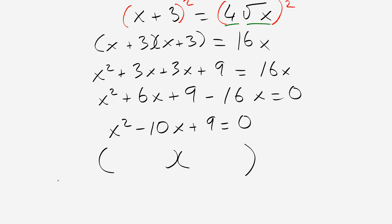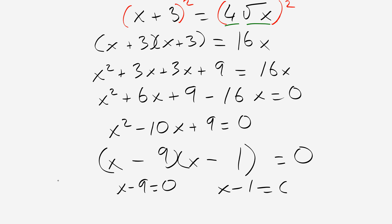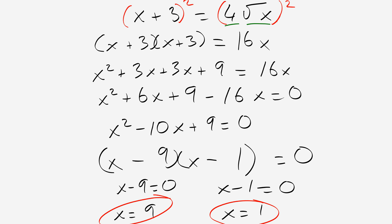We solve the quadratic equation, which is pretty straightforward at this stage. Factoring: x minus 9 equals 0 and x minus 1 equals 0, giving x equals 9 and x equals 1. The next thing we have to do is check our solutions — we have to substitute both back into the original equation to make sure both are acceptable.